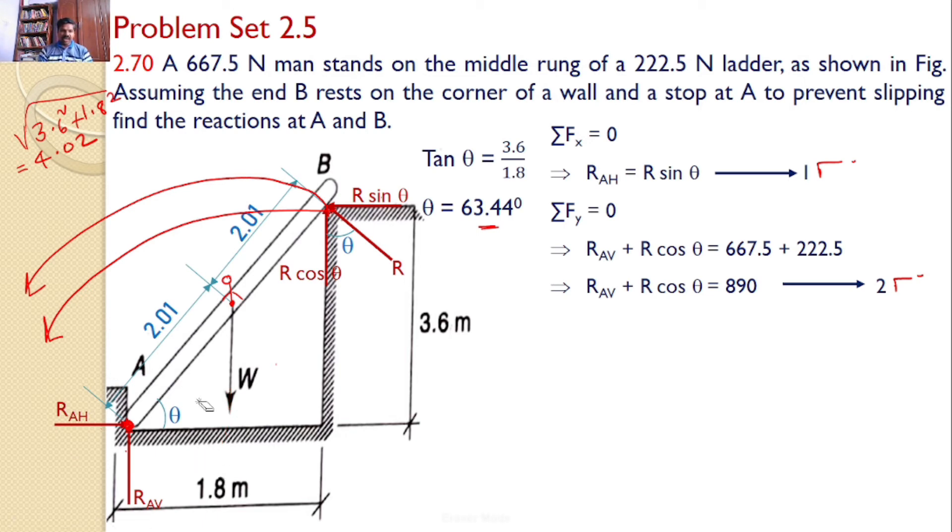What is required are the perpendicular distances. First, let us see the perpendicular distance of R sin theta. This is the line of action of R sin theta. From point A, the distance between this point and the line of action of R sin theta is this vertical distance, which is 3.6.